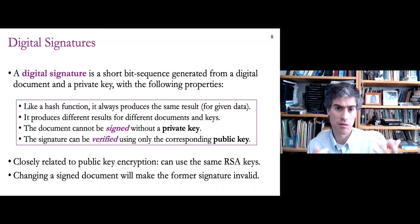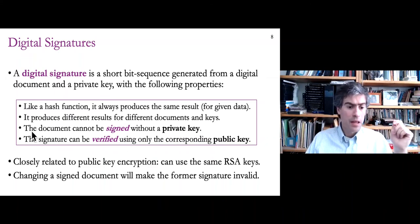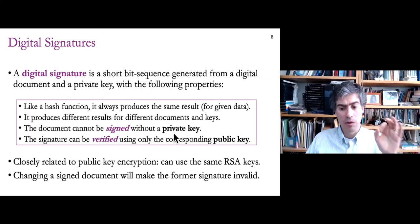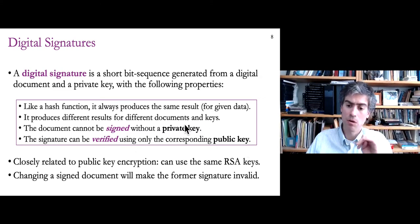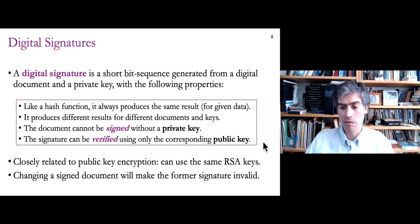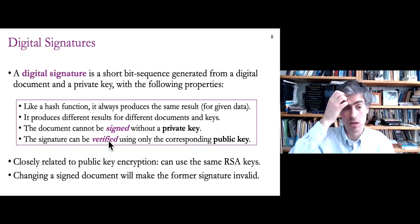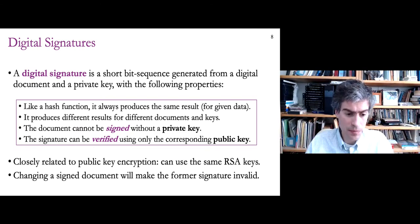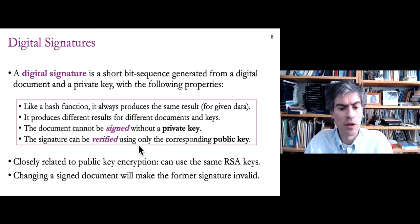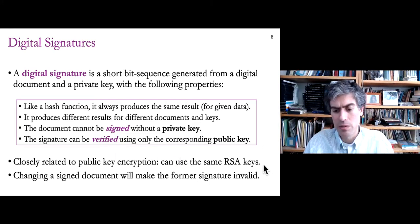The document cannot be signed correctly without having the private key. Importantly, the signature can be verified using only the public key. Just like with encryption, we keep private keys private and share public keys with the world. If everyone has our public key, they can use it to verify the documents we sign. This is very closely related to public key encryption — it actually uses encryption and decryption to perform the signature and verification — and it uses the same RSA keys. If you have a signed document and change the contents, the signature will no longer be valid.